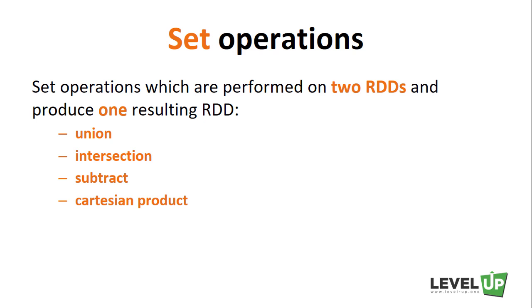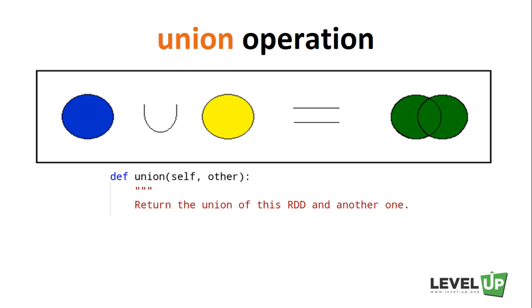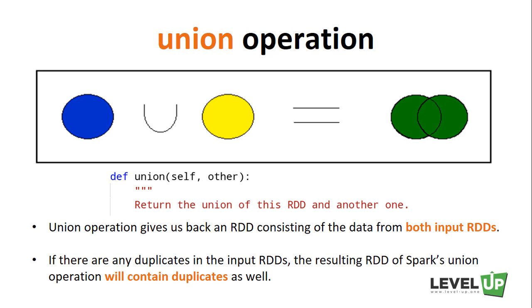Let's start by introducing the Union operation. Union operation gives us back an RDD consisting of the data from both input RDDs. This is quite useful in a lot of use cases. For instance, we can use it to aggregate log files from multiple sources. It is worth mentioning that unlike the mathematical Union operation, if there are any duplicates in the input RDDs, the resulting RDD of Spark's Union operation will contain duplicates as well.